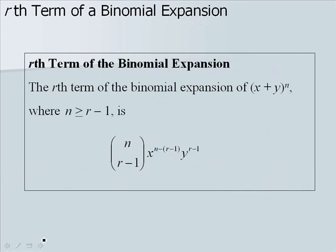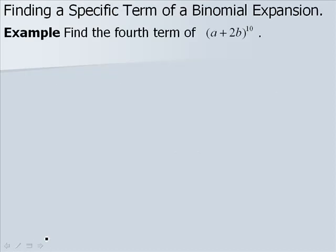The rth term of the binomial expansion of x plus y to the n, where n is greater than or equal to r minus 1, is n choose r minus 1 times x to the n minus (r minus 1) times y to the r minus 1. Here we want to find the 4th term of a plus 2b to the 10th power. So n is 10 and r is 4, since we're looking for the 4th term.